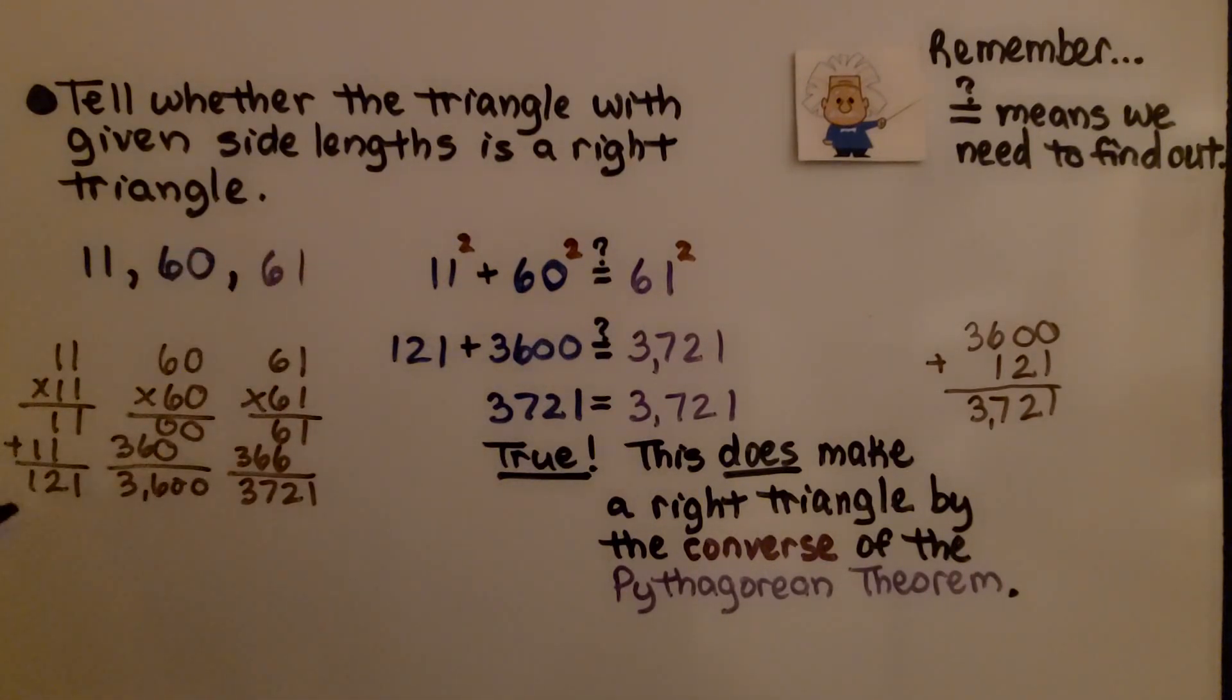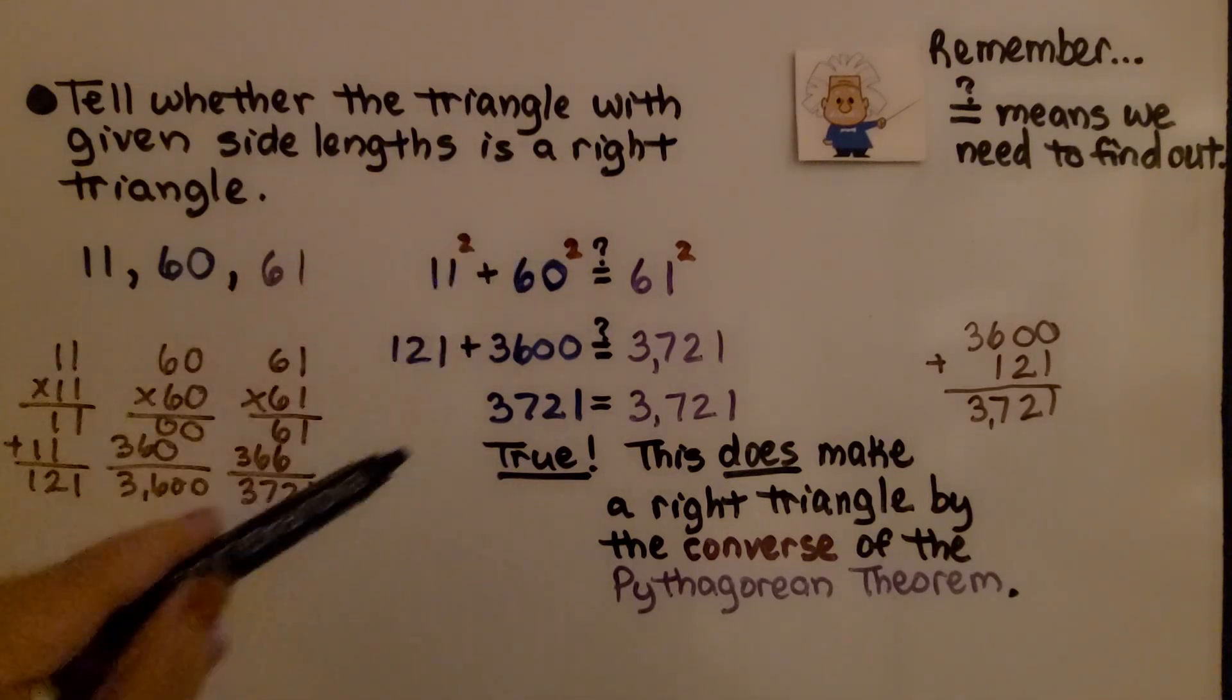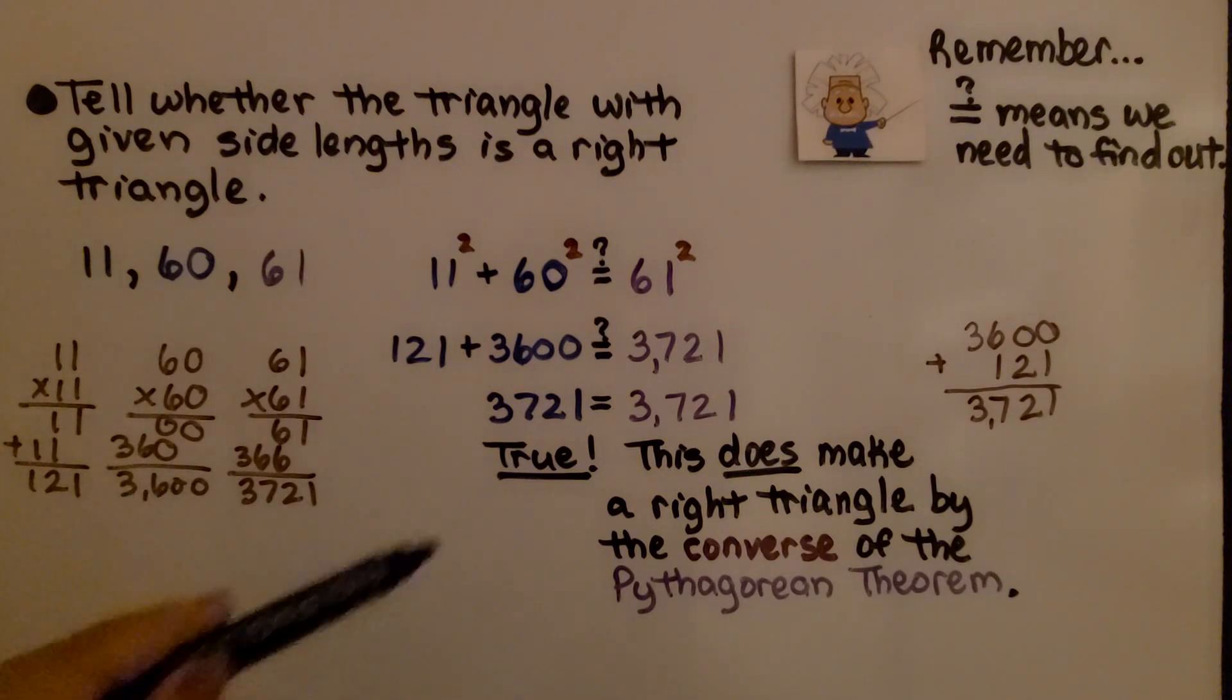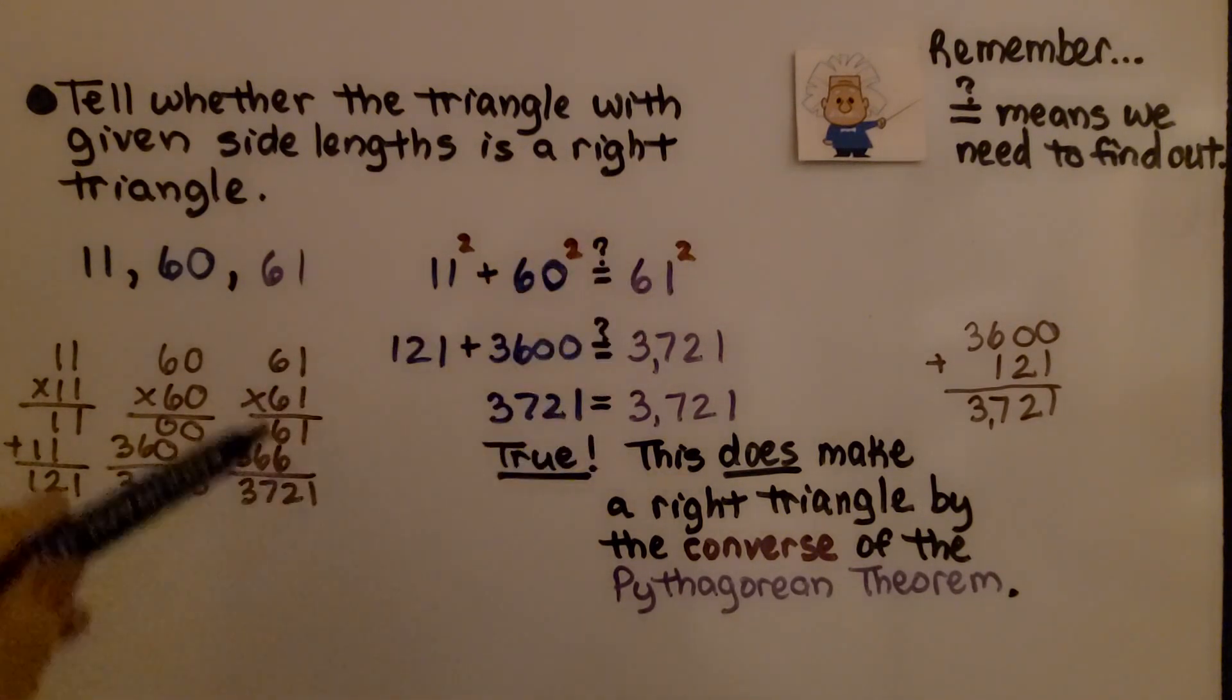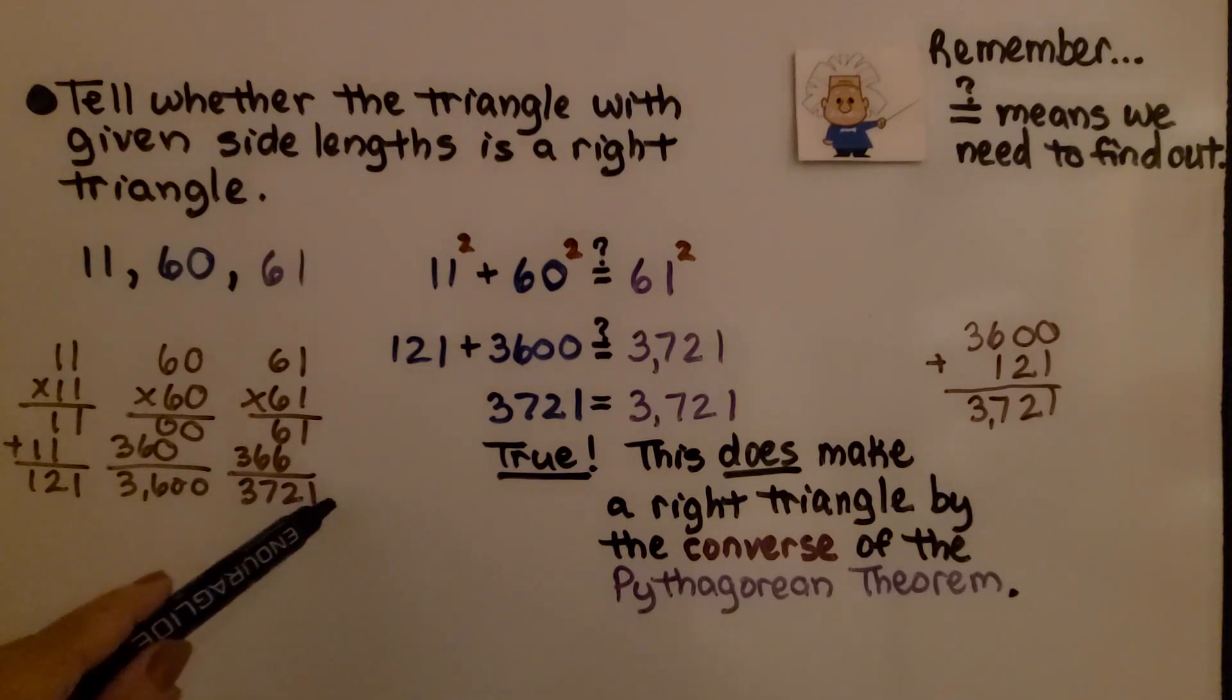11 squared is 11 times 11, that's 121. And 60 squared is 60 times 60, that's 3,600. And 61 squared is 61 times 61, that's 3,721.